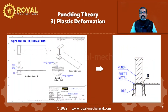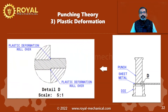The next stage is the plastic deformation stage. Let's take a closer look at detail view D. As the punch descends further, the raw material undergoes plastic deformation. You can observe the rollover on the raw material due to the plastic deformation. Rollover is a curvature shape that is formed on the raw material. You can observe the rollover is formed both on the punch side as well as the die side.